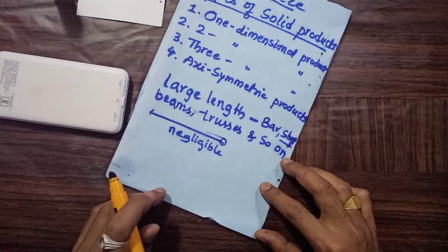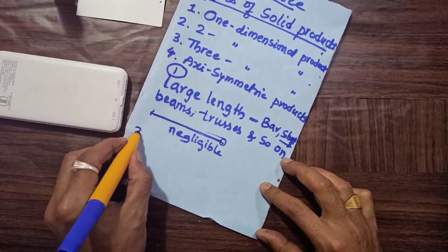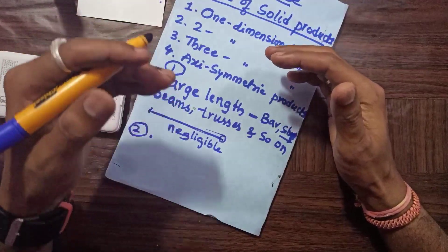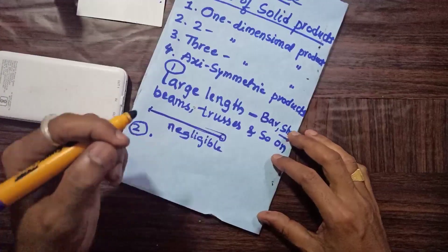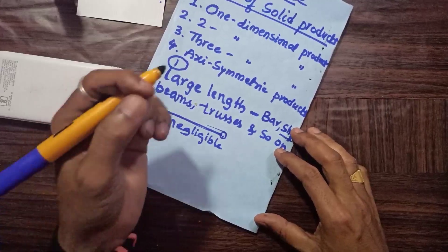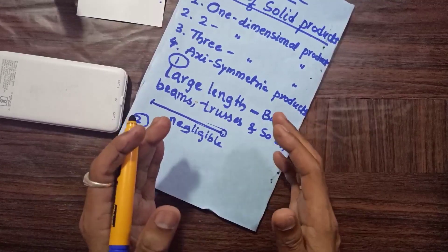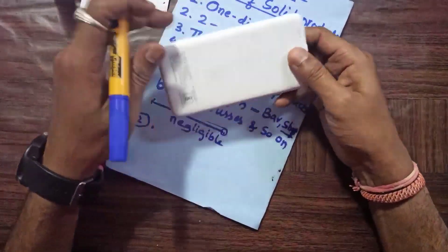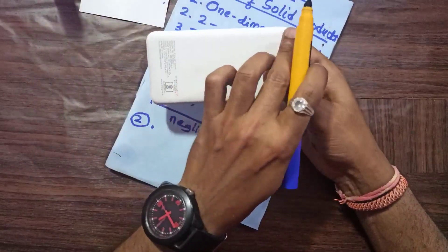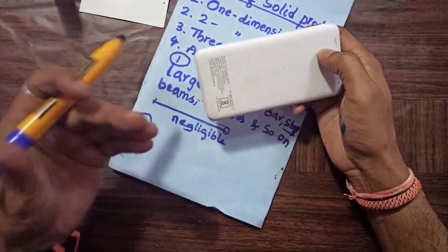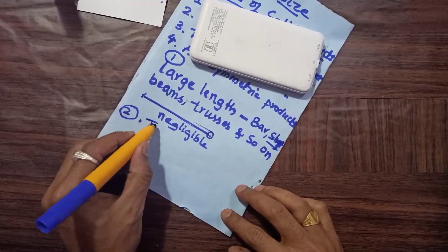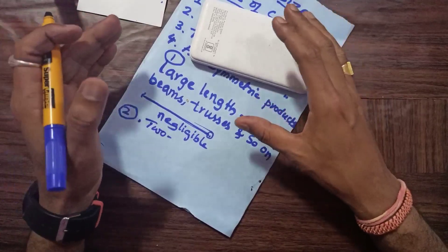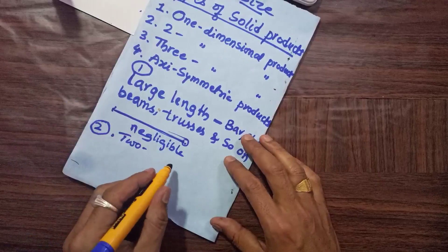Now for two-dimensional products: a solid product is two-dimensional when two dimensions — say the length and width — are large as compared with the third dimension. Take the example of a rectangular plate: the length and width are significant, but the thickness is negligible.